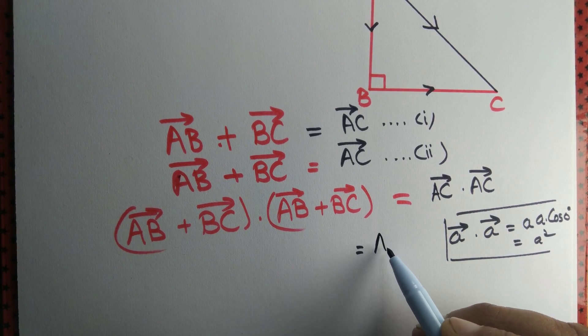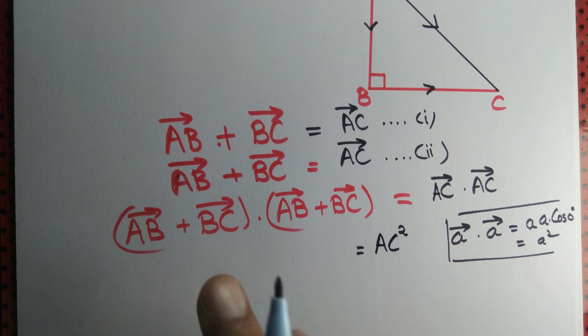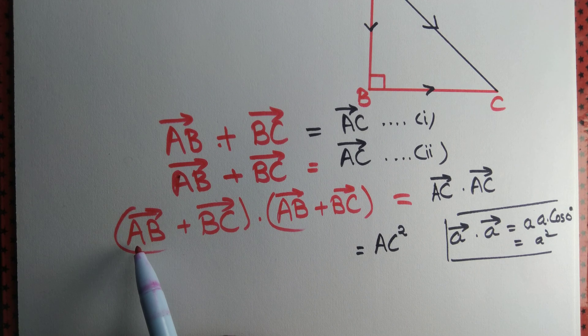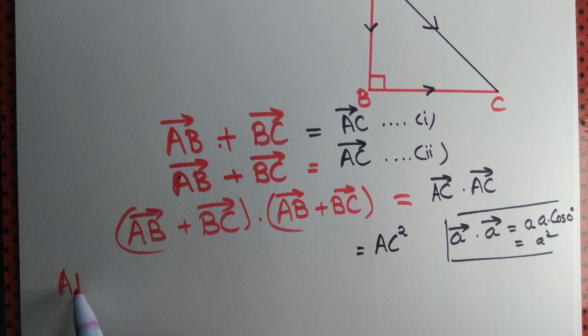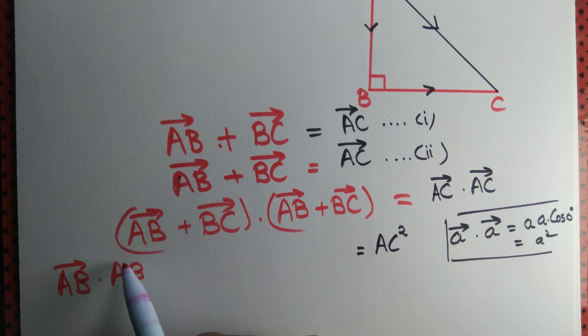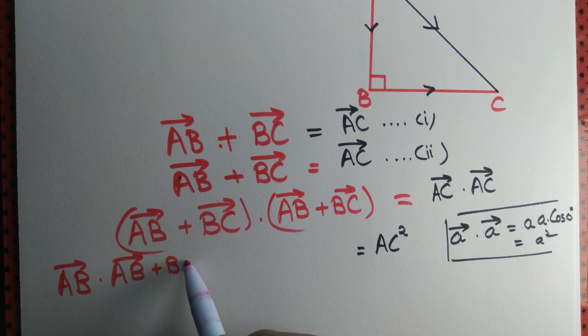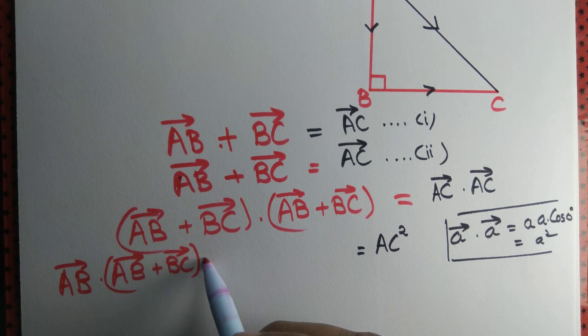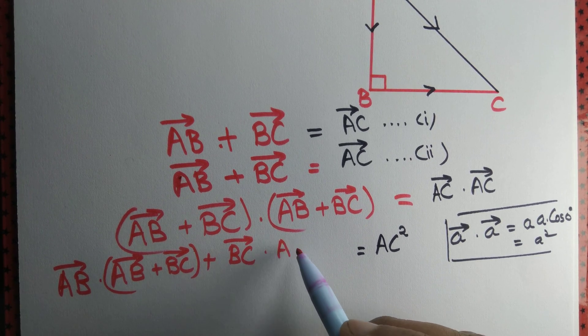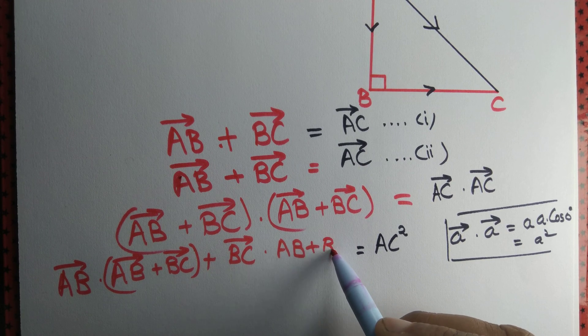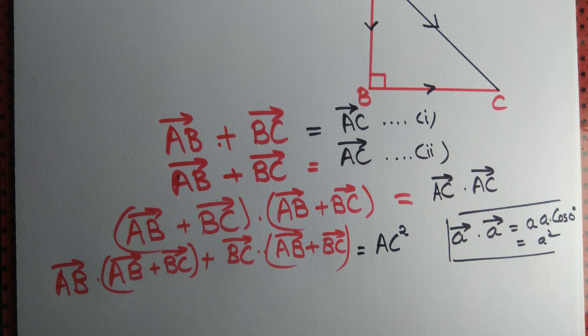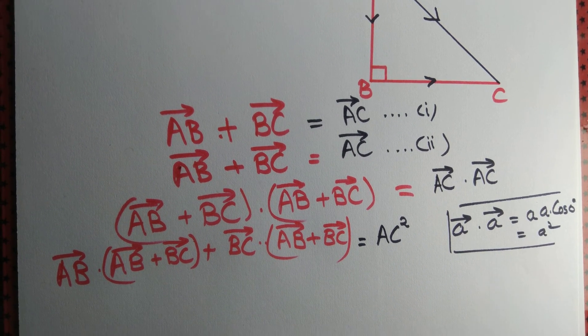Since A dot A equal to A square, what about left hand side? Let's apply distributive law. We take dot product of AB with AB plus BC. We are applying distributive law. AB dot AB plus BC.